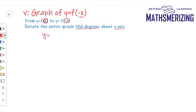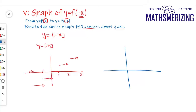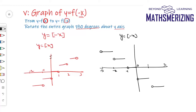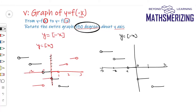For example, suppose I have to draw the graph of y equals the greatest integer function of (−x). The basic graph is y equals the greatest integer function of x. I'll rotate this graph 180 degrees about the y-axis. Alternatively, I can place a two-way mirror on the y-axis and take the reflection of left on right and right on left.